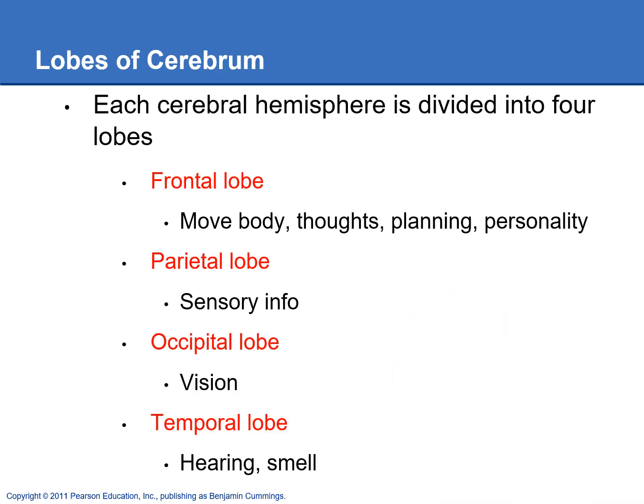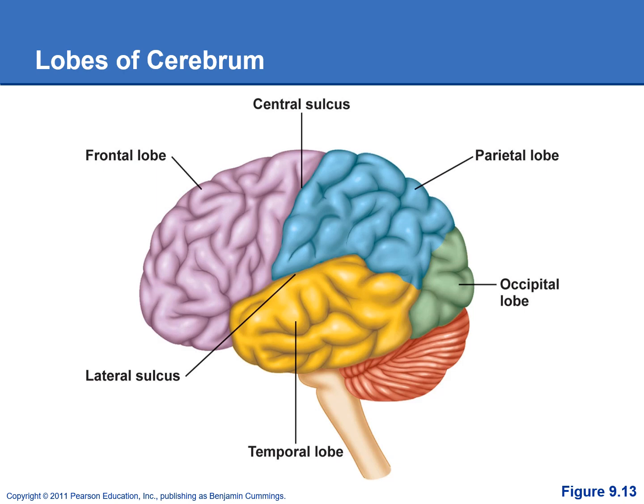We have some different lobes of the cerebral cortex. The frontal lobe, shown in purple, is right behind your forehead and on the top of your head. It's responsible for giving you your personality — this is where you're thinking and planning things — and your motor cortex is also here, controlling the movements of your skeletal muscles.